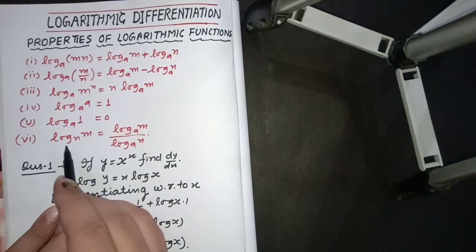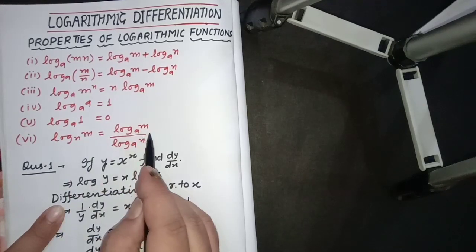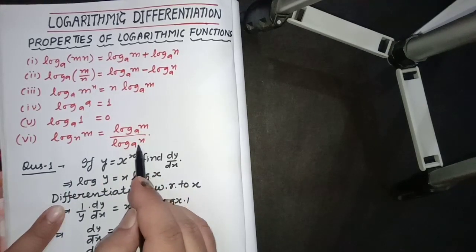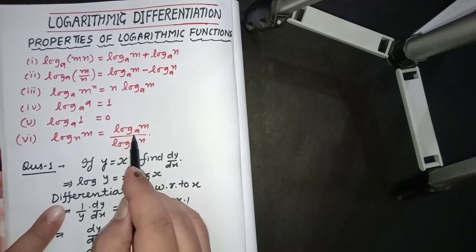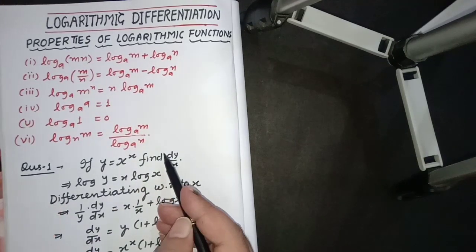There is also a rule of changing the base. Suppose we have log m base n, that will be written as log m base a upon log n base a. It means same base will be allotted to both of the fractions.